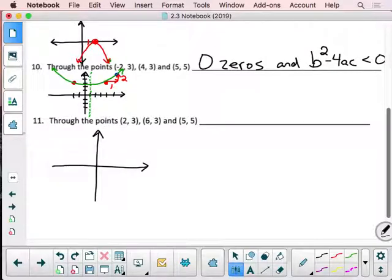This one here, if we look at the point 2, 3, and 6, 3, over 2, 3, and 6, 3, symmetric points again. So that means, again, if we add those together and divide by 2 at 4, that's going to be my axis of symmetry. Then we have that last point they give us, which is at 5, 5. 1, 2, 3, 4, 5, up 5.